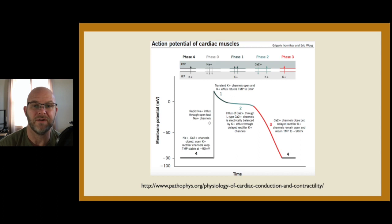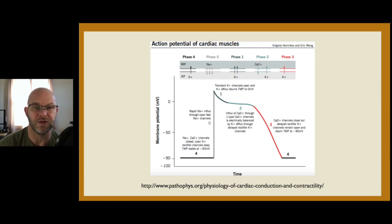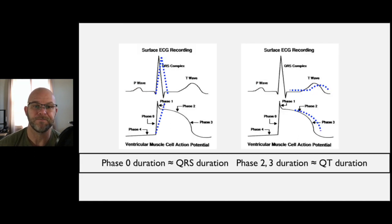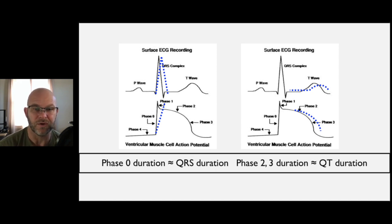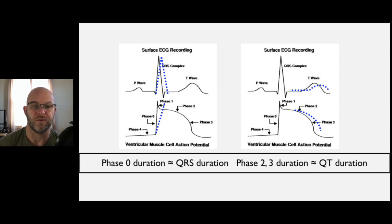What you have here is four drifts up to the threshold. When it hits that threshold, phase zero fires, which roughly corresponds with your QRS. Then phases one, two, and three are everything resetting or repolarizing. So phase zero roughly correlates with your QRS, and the QT duration is really impacted by phases one, two, and three.